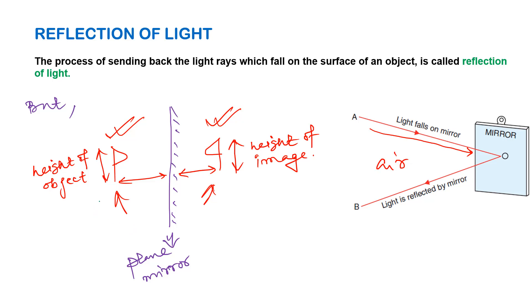Lateral inversion occurs in the image formed by a plane mirror. Two things to remember: first, the height of the object equals the height of the image (h_o = h_i). Second, the distance of the object from the mirror equals the distance of the image from the mirror.